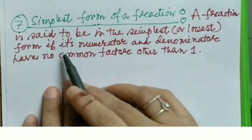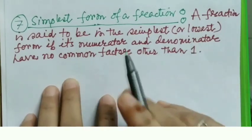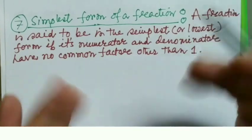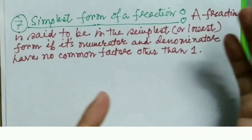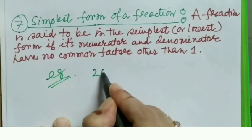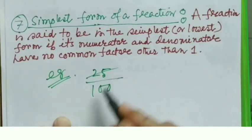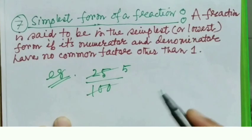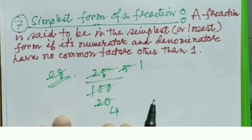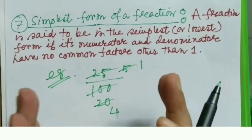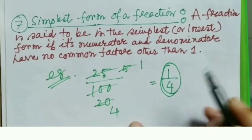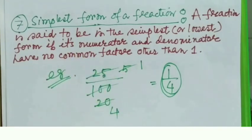A fraction is said to be in its simplest or lowest form if its numerator and denominator have no common factor other than 1. We cancel out both the numerator and denominator with a common factor as long as possible. For example, 25 divided by 100: cancelling with 5 gives 5/20, then cancelling with 5 again gives 1/4. So 1/4 is the simplest form of 25/100.